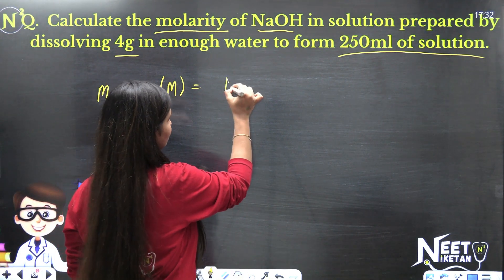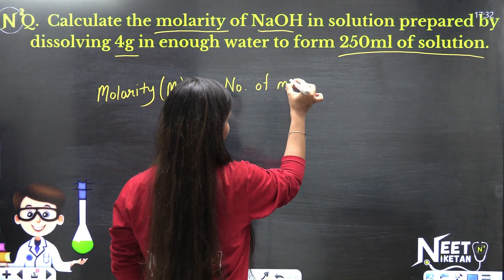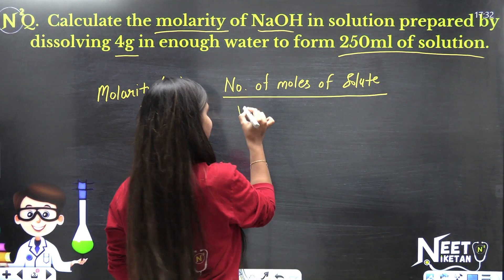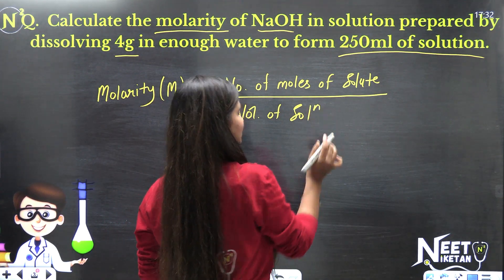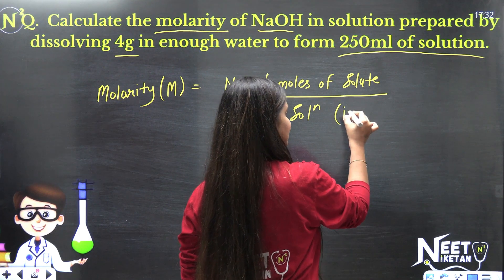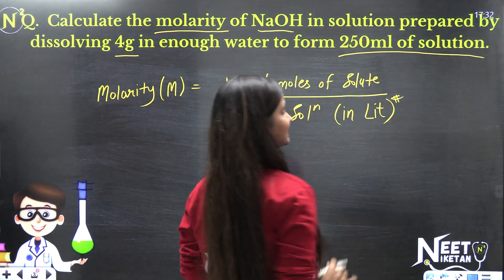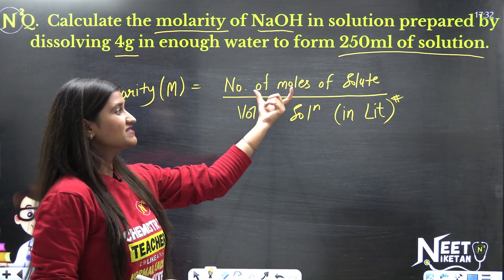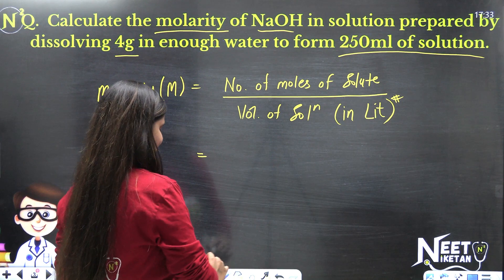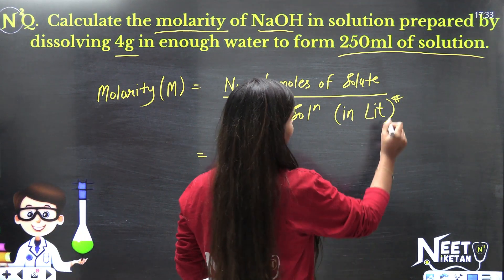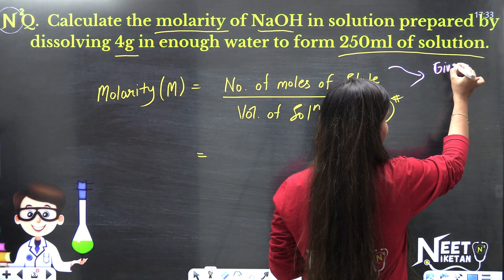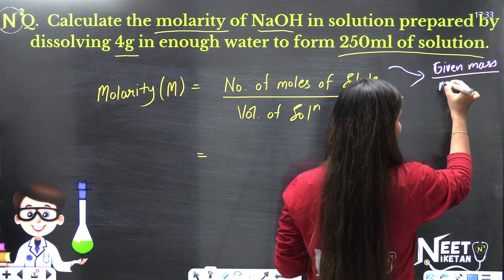Molarity, if I remind you, is the number of moles of solute in 1 liter of solution. Molarity, how do we calculate? Number of moles of solute over volume of solution in liters. One thing to remember - you always have to take the volume of solution in liters.